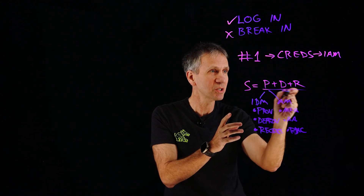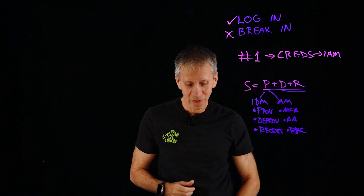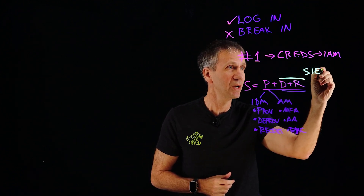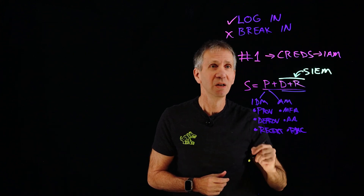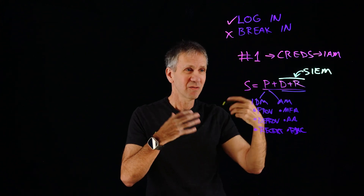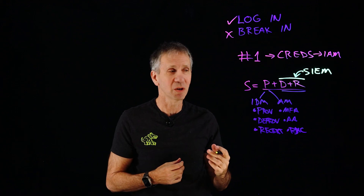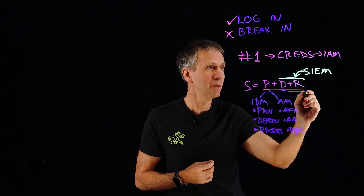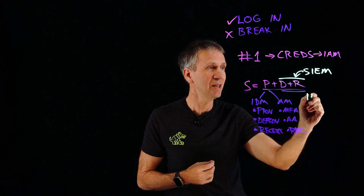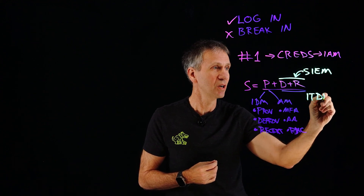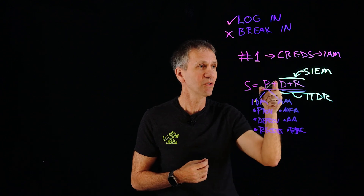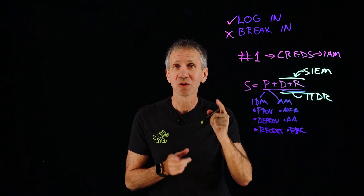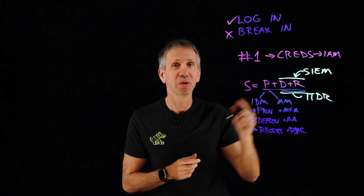But what about the detection and response part? That's largely been left to the SIEM — the security information and event management system. It does the detection: I find a problem, and response: now I do something about it. But we really need a capability to do an IAM SIEM — basically an identity threat detection and response capability — so that we have an answer for detection and response in IAM. That's what this video is going to deal with.